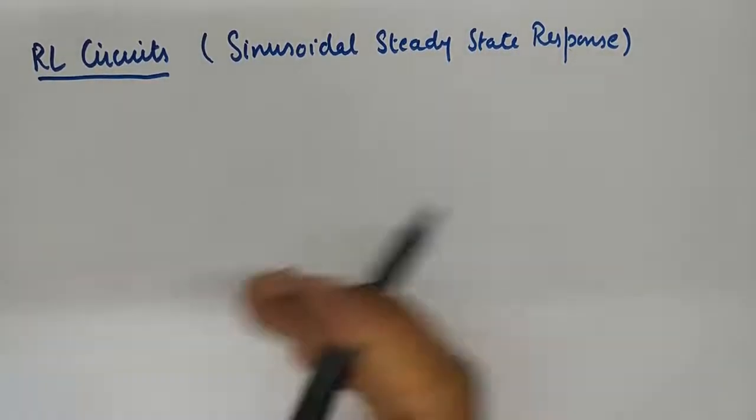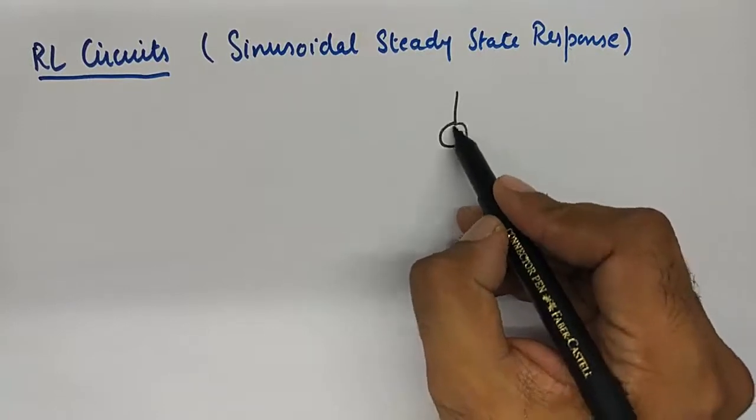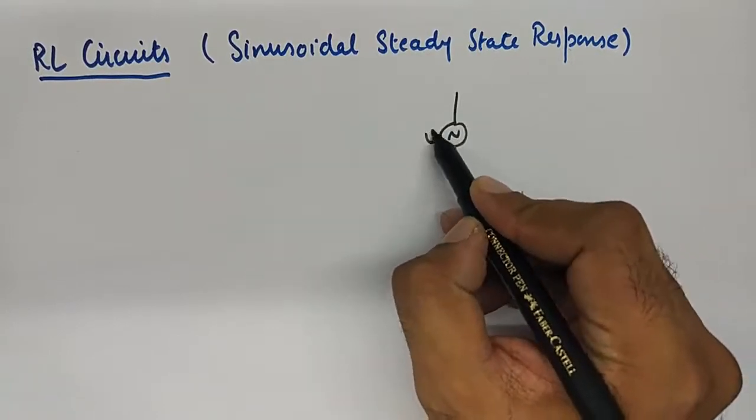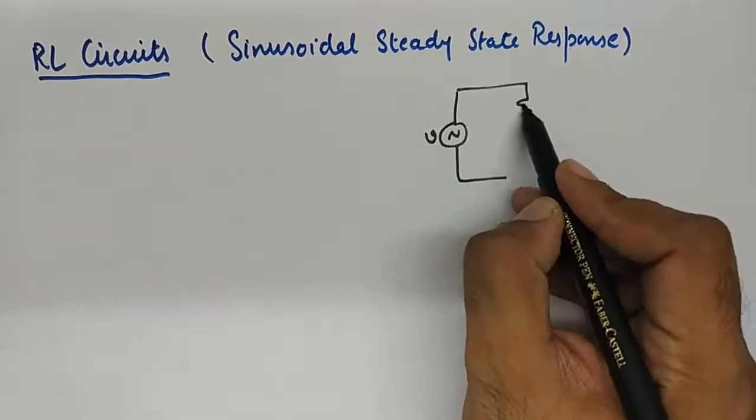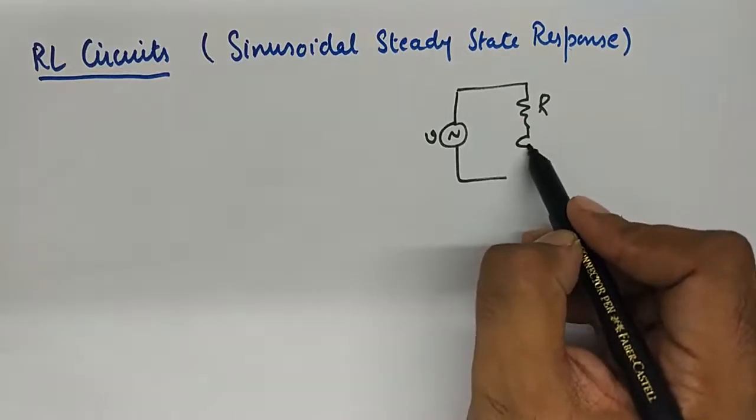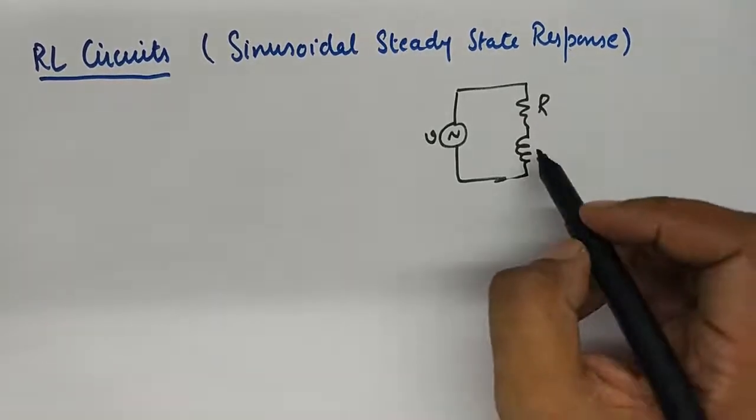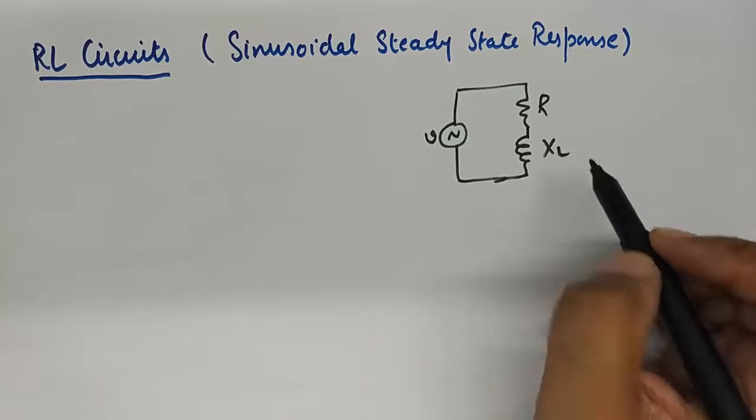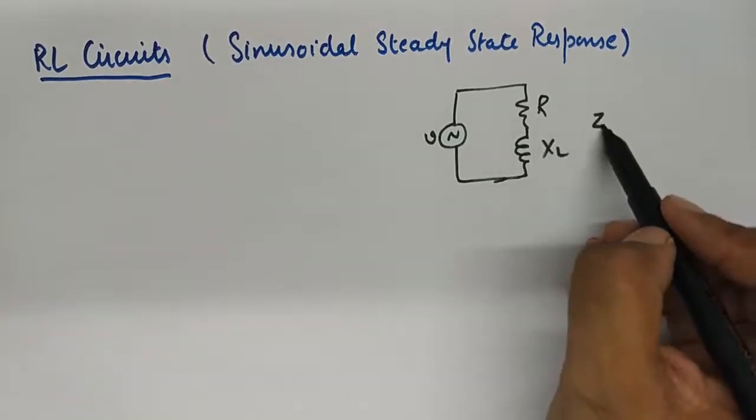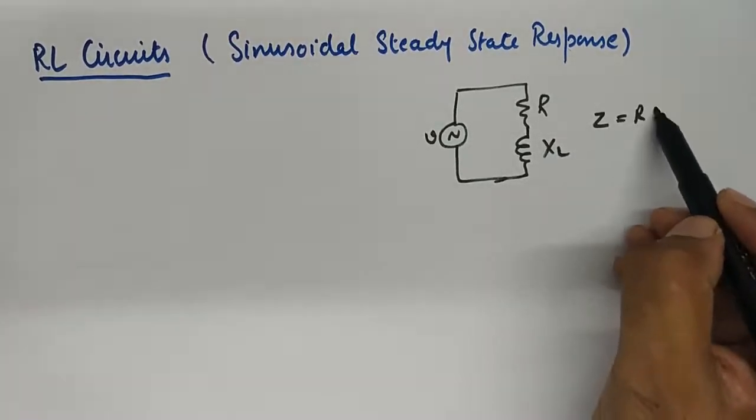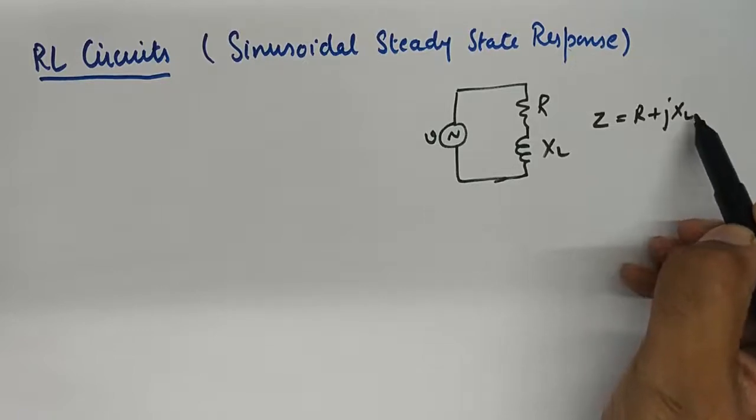In RL circuits you will find a sinusoidal voltage source connected in series with a resistor and an inductor. Because of this inductor you will find XL here, and the total impedance of this circuit will be R plus jXL.